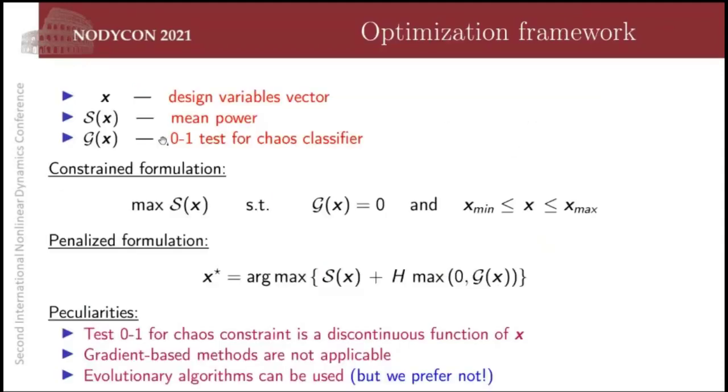So the optimization framework. We are going to denote S the objective function, which is the mean power, G the constraint, which is the zero-one test classifier. So we want to maximize the output power respecting the constraint, the classifier being equal to zero, which corresponds to regular dynamics. And our design vector, which will lump the variables, will be contained in a certain search region. We can rewrite this in a penalized formulation like this, which transforms the constrained problem in an unconstrained one with this novel objective function.